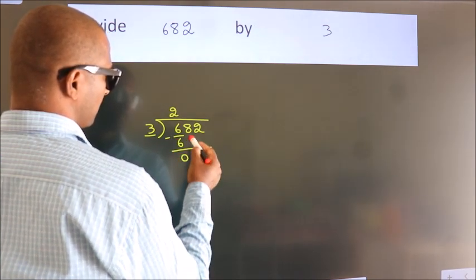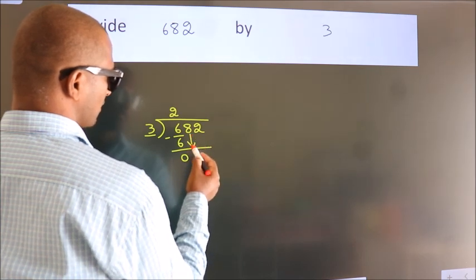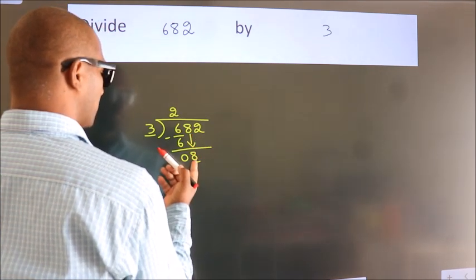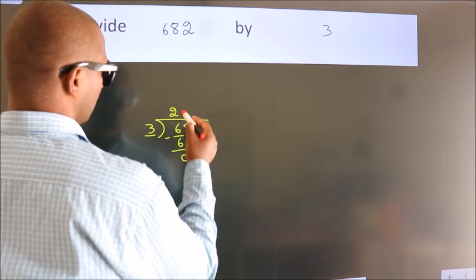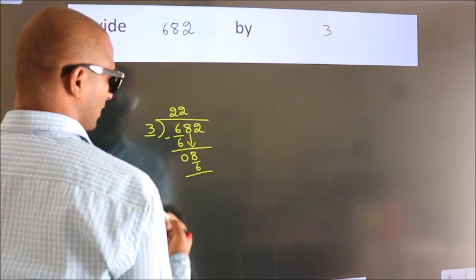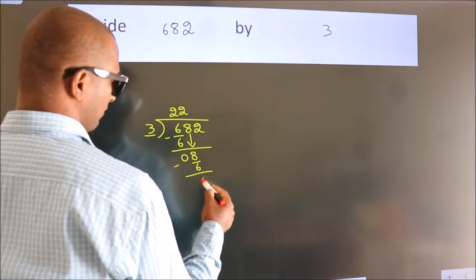After this, bring down the next number. So 8 down. A number close to 8 in the 3 table is 3 times 2, which is 6. Now we subtract. We get 2.